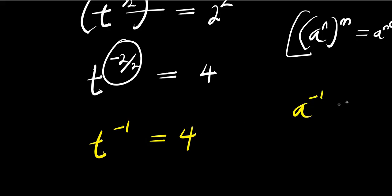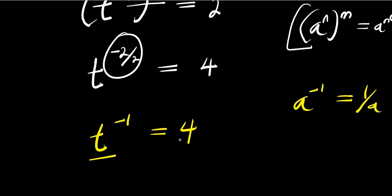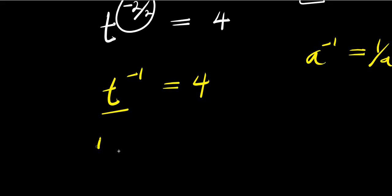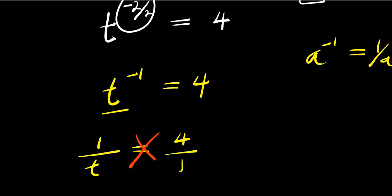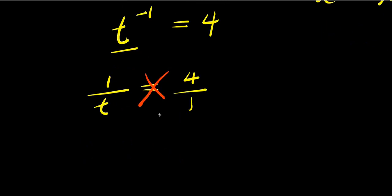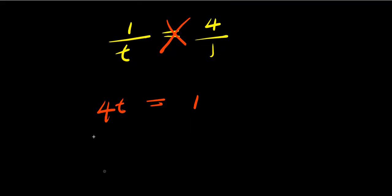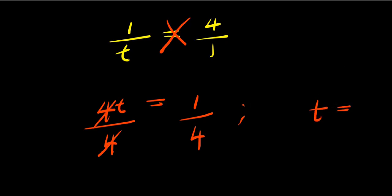We use the identity a to the power of negative 1 equals 1 over a. So t to the power of negative 1 is the same as 1 over t, and this equals 4 over 1. We can cross multiply: 4 times t equals 1 times 1, so 4t equals 1. Dividing both sides by 4, we have t equals 1 over 4.